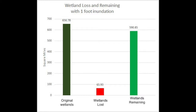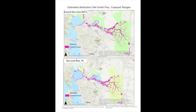Furthermore, our analysis shows that out of 656 square miles of San Francisco estuary wetlands, 65 square miles of wetlands will be lost due to one foot of sea level rise inundation. Hence, 590 square miles of wetlands will remain in the San Francisco estuary. We hypothesized that more wetlands would be lost in this analysis, but in reality only 10% of wetlands will be lost.